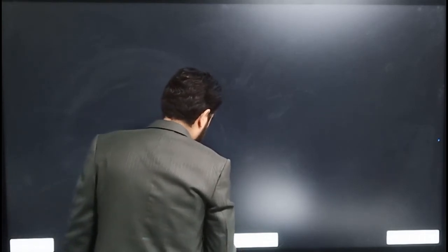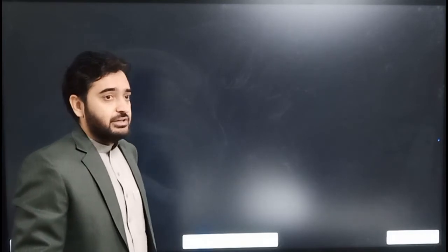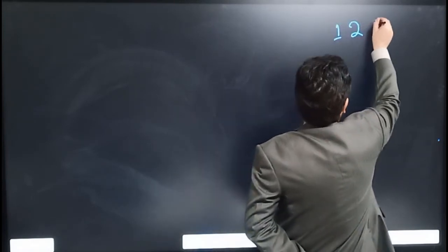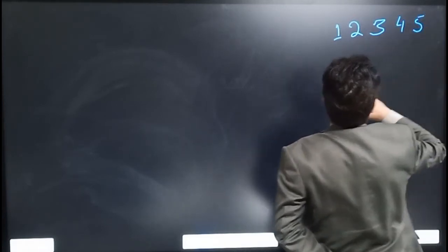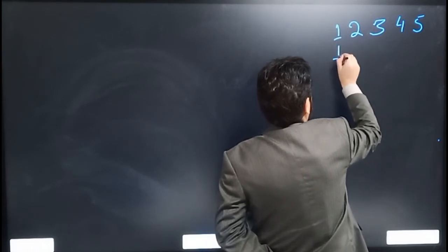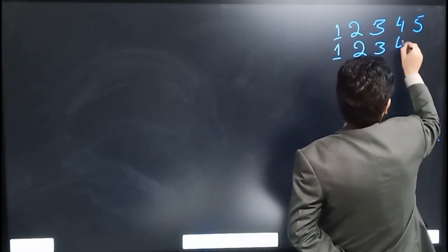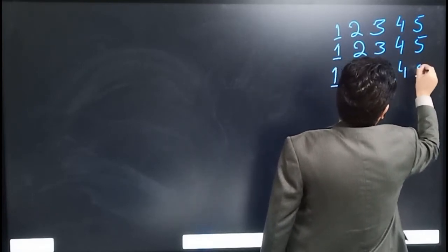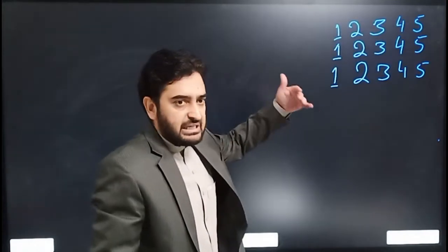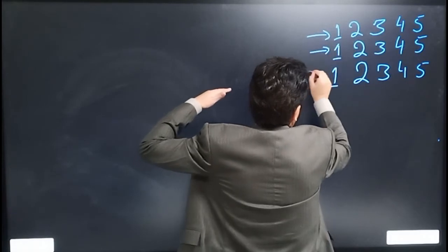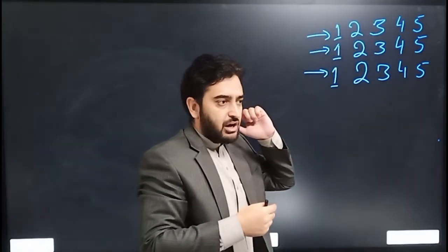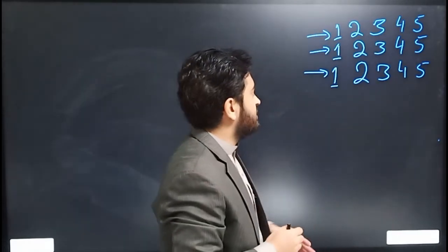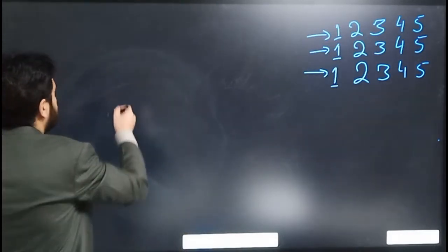Now let's see an example of a nested loop structure. The problem we have is to print: 1 2 3 4 5, then again 1 2 3 4 5, and again 1 2 3 4 5 on the screen. We want to print this same output repeatedly — this is the repetition of similar output again and again.